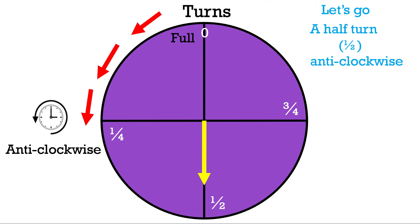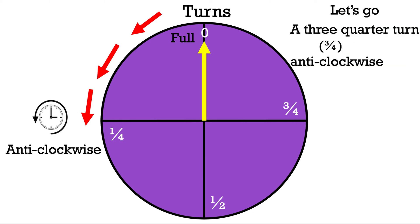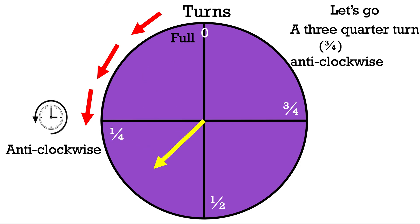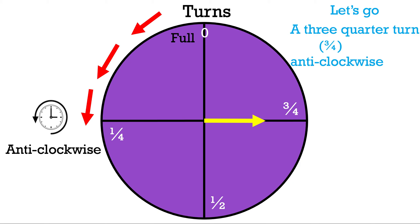Let's move back to the original position. The question says: a three-quarter turn anticlockwise. We go to the left and move three sections of the circle. Passing the quarter turn, passing the half turn, and reaching the three-quarters turn. We've reached the three-quarters turn in the anticlockwise direction, passing three sections of the circle.